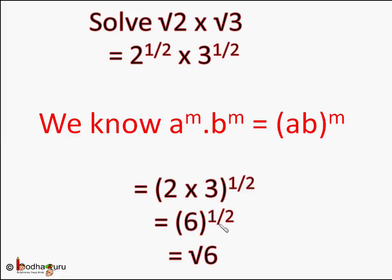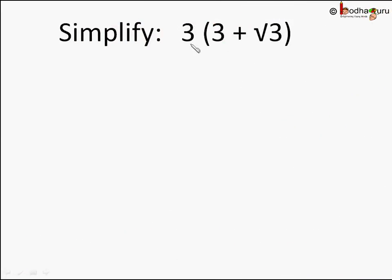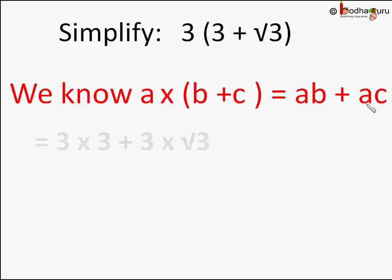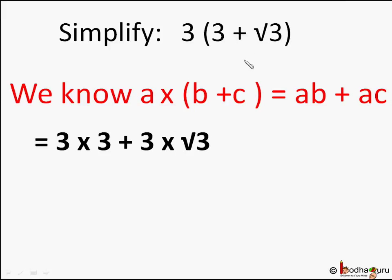Let us take another example: simplify 3 into bracket (3 plus square root of 3). We know a into (b plus c) is equal to ab plus ac — meaning when we multiply an algebraic expression by a number, we multiply every term by that number. So here a is 3, b is 3, and c is square root of 3. We first multiply 3 by 3 and 3 by square root of 3, then add the two products. So it is 3 into 3 plus 3 into square root of 3, which equals 9 plus 3 square root of 3. We cannot simplify it further.